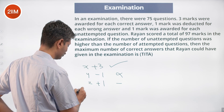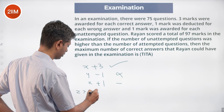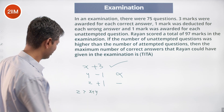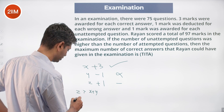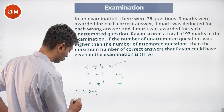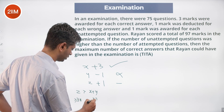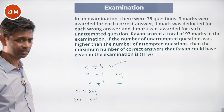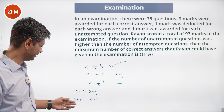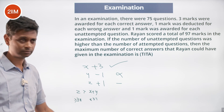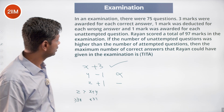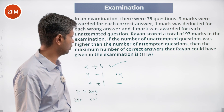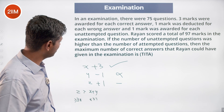Let X be correct, Y be wrong, and Z be unattempted. Z is greater than X plus Y, and all three together equal 75. So Z is more than half, meaning Z is 38 or more, and X plus Y is 37 or fewer. At least 38 questions were unattempted — that is what we know.